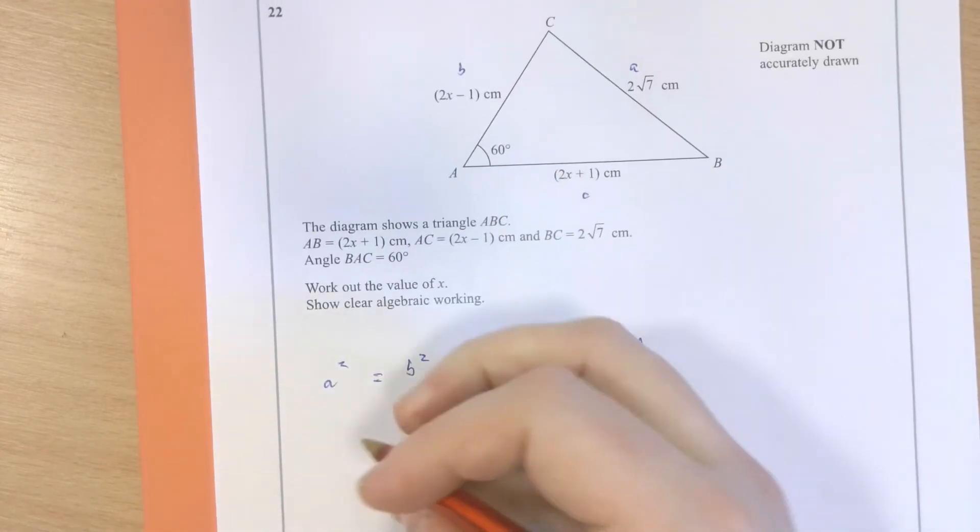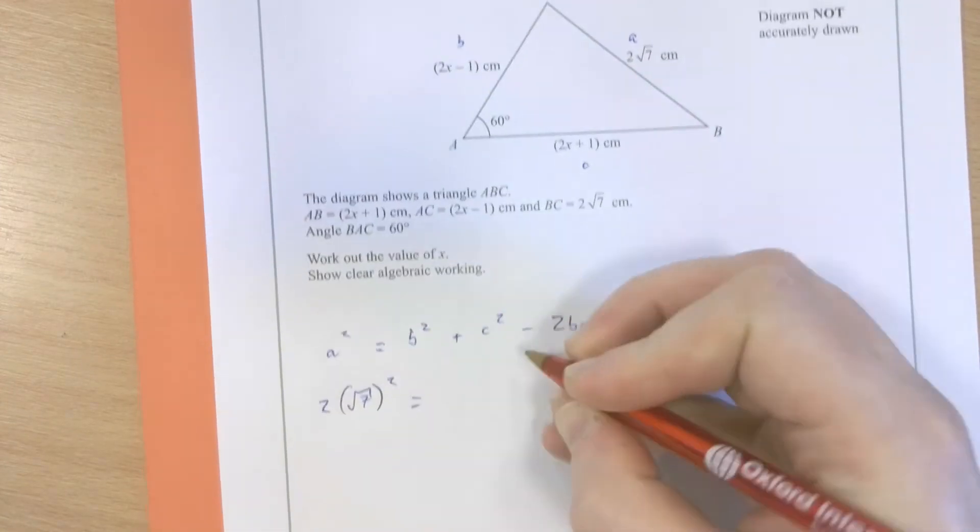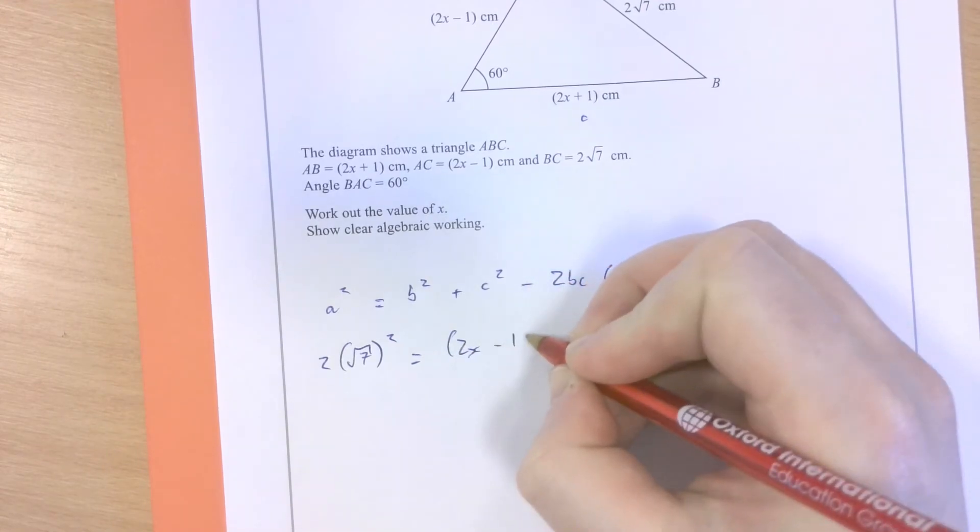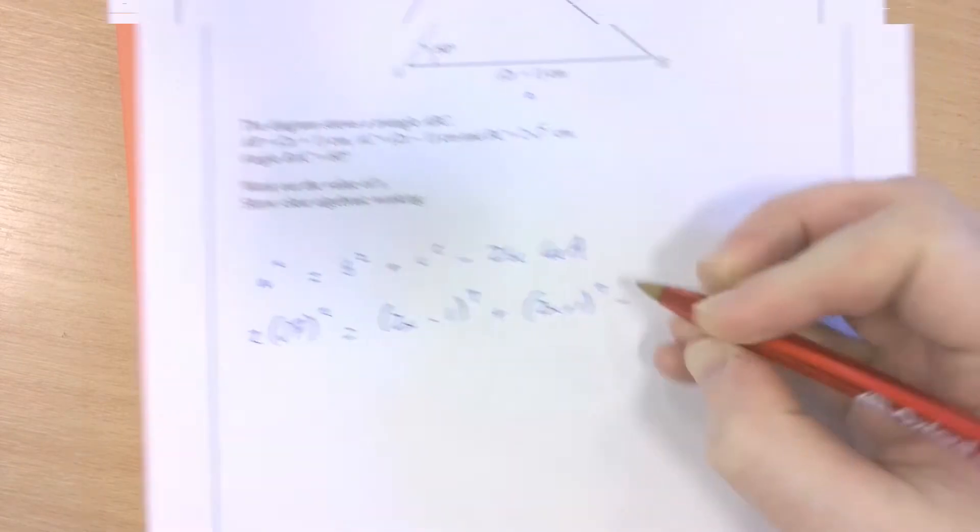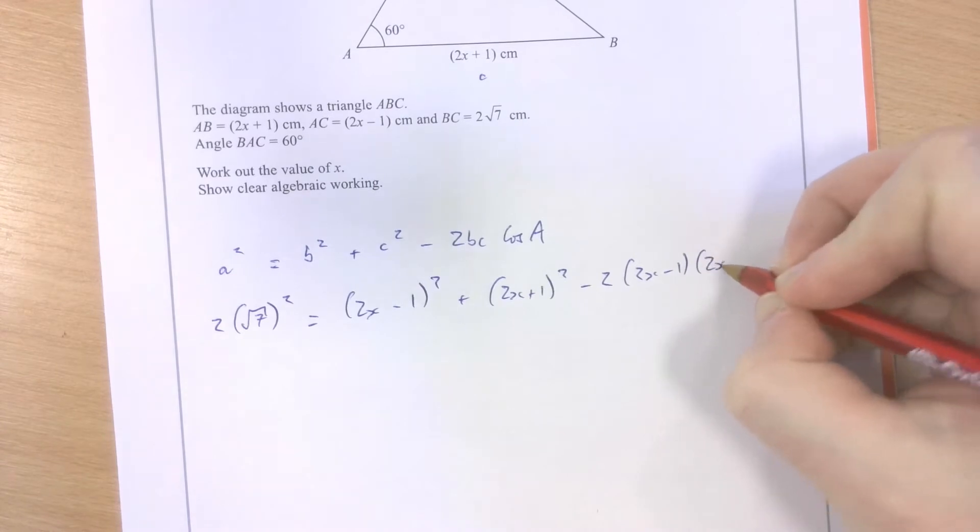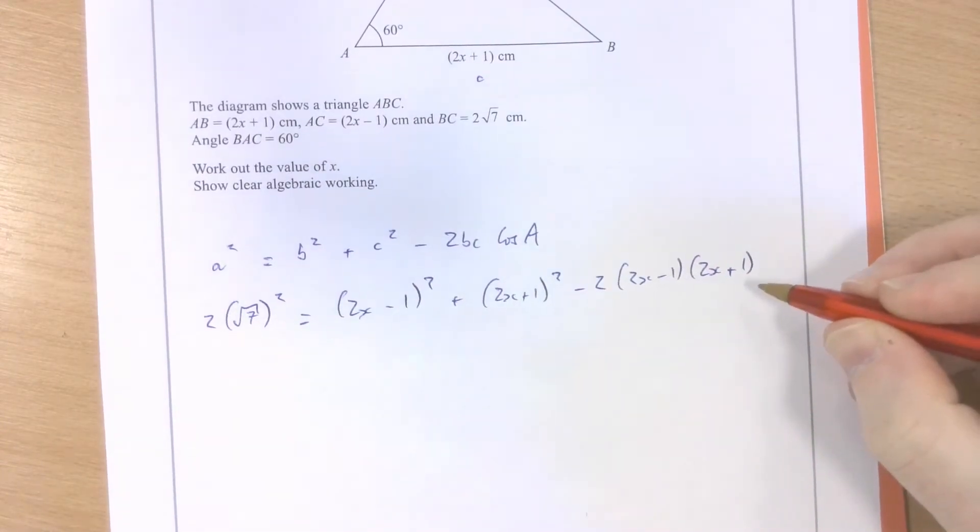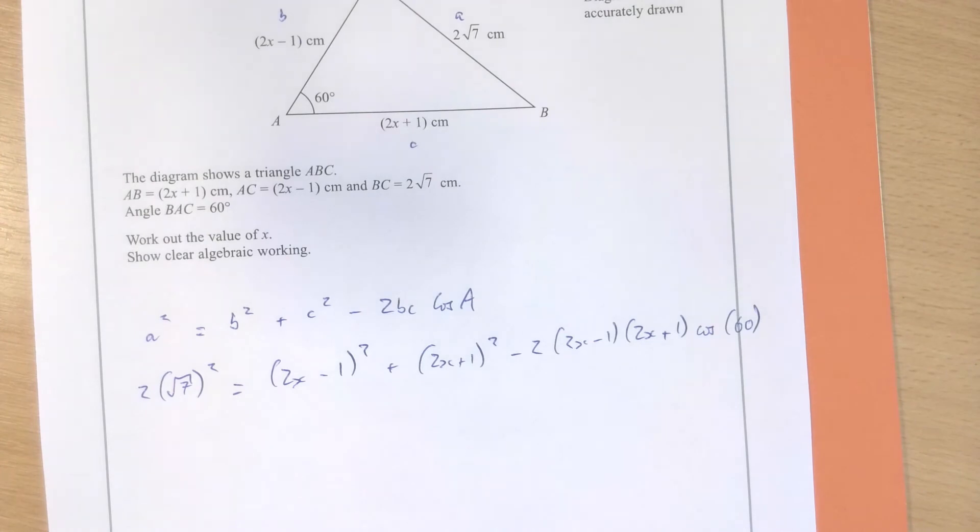So, let's begin. A is 2 root 7, that's what's being squared. B is 2x minus 1 squared plus C, 2x plus 1 squared minus 2 times B times C times cos of A, which is 60. All right, now, the rest of this question is literally going to be spent simplifying all of this algebra, forming an equation, and solving for x.